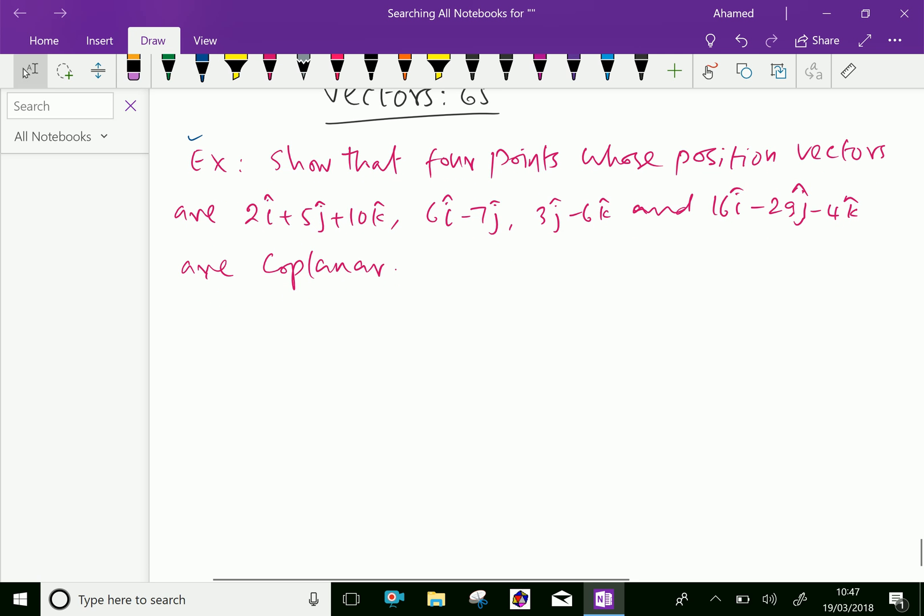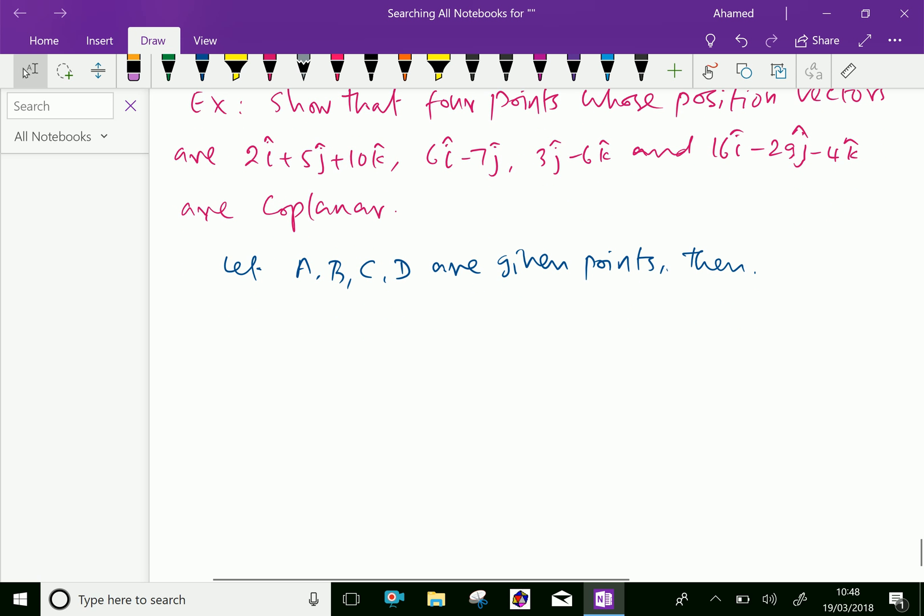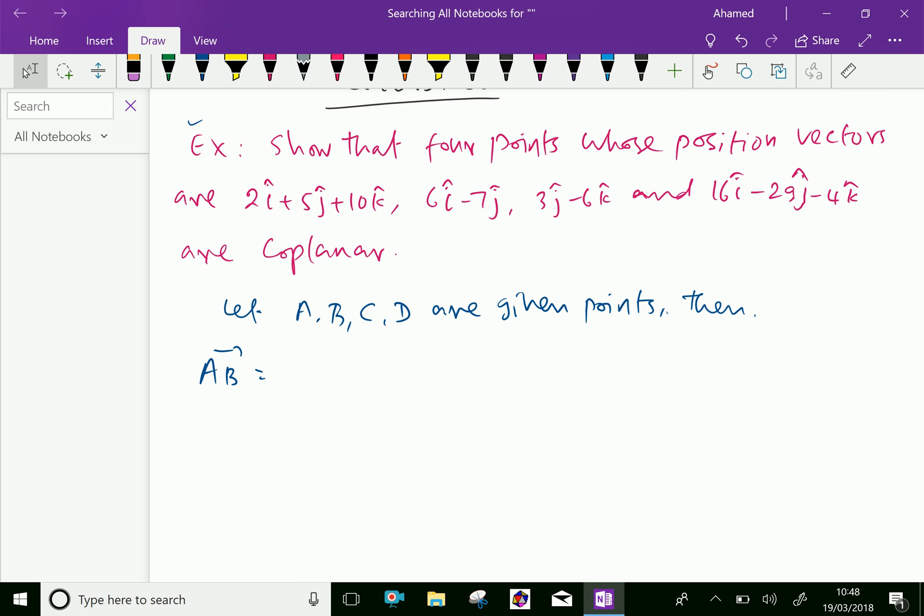Now let the points A, B, C, D are given points. Then we can say vector AB equals 6i minus 7j minus 2i plus 5j plus 10k, which equals 4i minus 12j minus 10k.